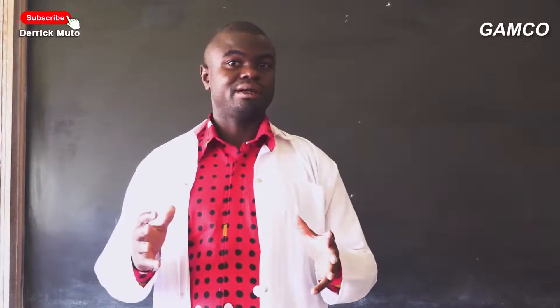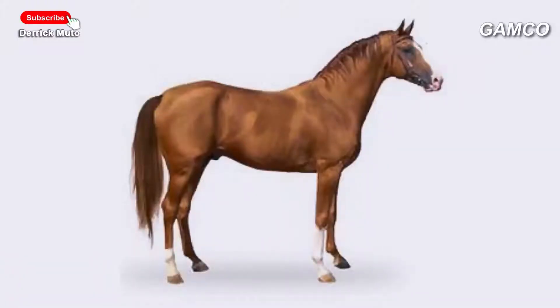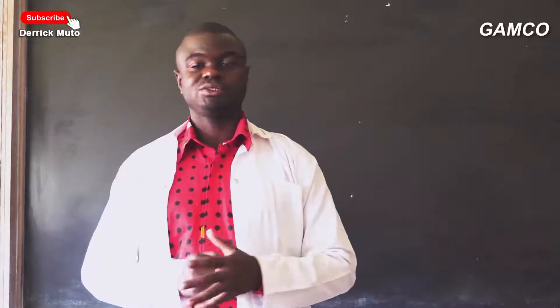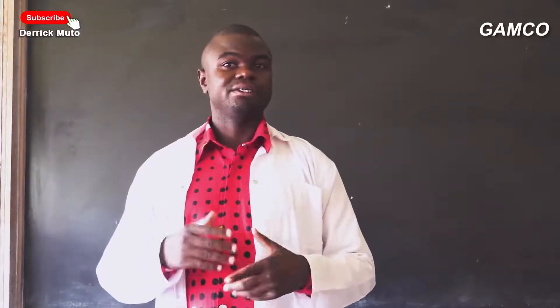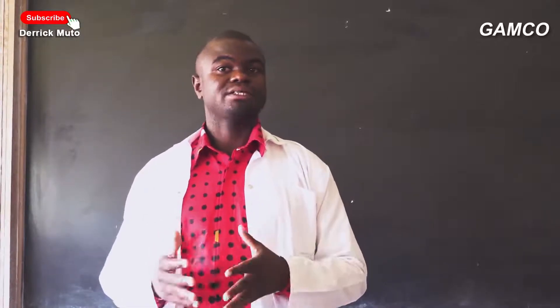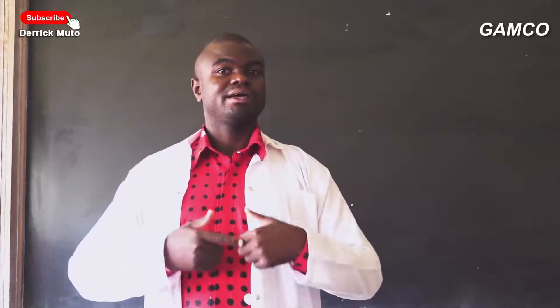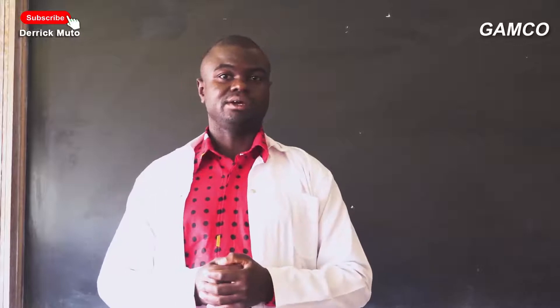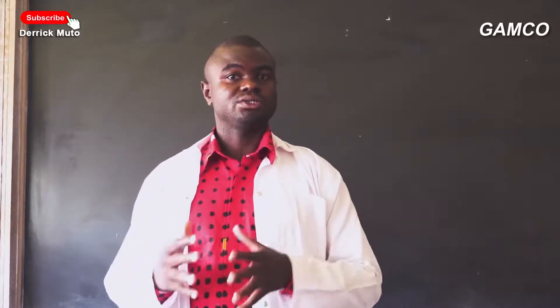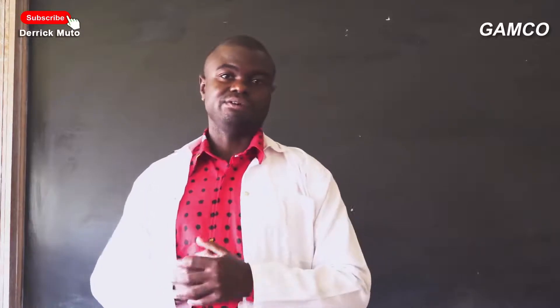An example of the polyestrous cycle is a horse. The second type of sexual cycle is the menstrual cycle. Here the female undergoes a more or less continuous period of sexual activity, meaning the end of one cycle is immediately followed by the next sexual cycle. We shall discuss how the menstrual cycle is controlled in our next video.